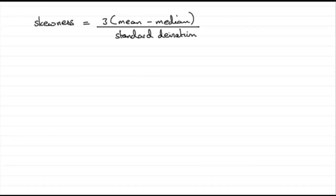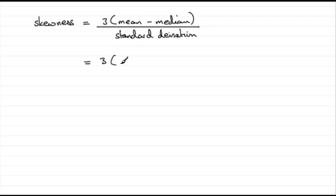This is a nice easy one to finish on because they give us the formula for skewness, and all we need to do is put in the values we've calculated earlier. So we've got three times the mean, and the mean we worked out to be 18.91.